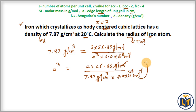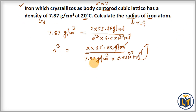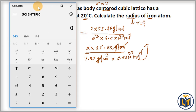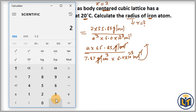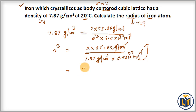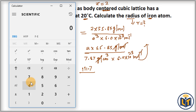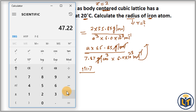After canceling units, the volume of the unit cell will be in centimeter cubed. Multiplying the top values: 2 times 55.85 gives 111.7. The bottom value is 7.87 multiplied by 6.0, which gives 47.22.